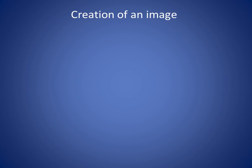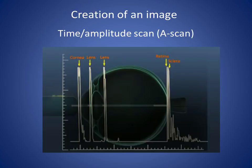Each layer of tissue in the body produces a separate reflection of the ultrasound signal. In the original type of scanner, these reflections were simply displayed on the screen of a cathode ray oscilloscope. This results in a trace where the x-axis represents time and the y-axis represents the amplitude of the reflection — that is, how strongly the sound is reflected. Each layer producing a reflection shows up as a peak on the trace, giving rise to the name amplitude, or A-scan. The diagram shown shows an A-scan which could result from the layers in the eye. The amplitude of the peaks depends on the difference in acoustic impedance between the tissues on each side of each boundary.